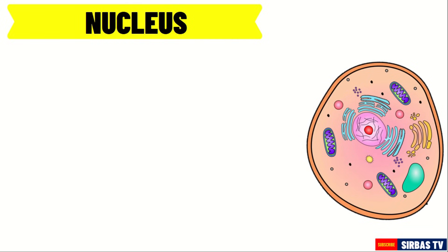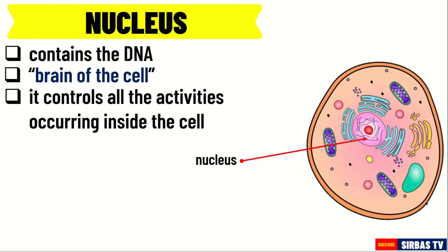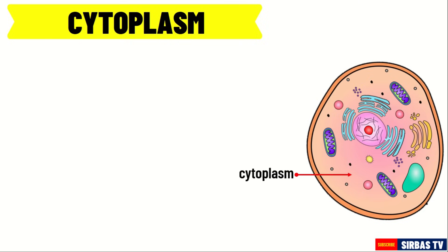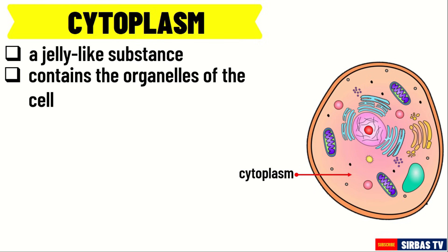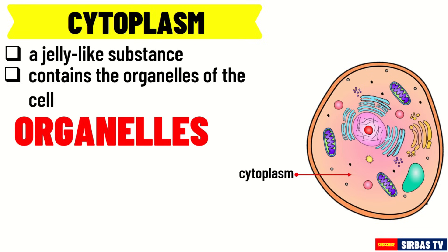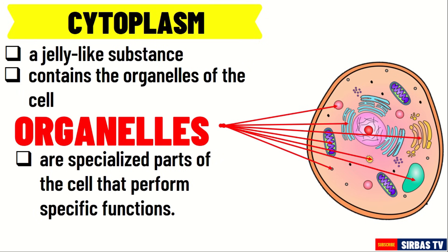The next part is the nucleus. The nucleus is the most noticeable part of the cell. It appears circular or oval in shape. It contains the deoxyribonucleic acid or DNA, which is the hereditary material that carries genetic information in all living things. It is called the brain of the cell because it controls all the activities occurring inside the cell. The cytoplasm is the jelly-like substance that can be found inside the cell. It contains the organelles of the cell that are outside of the nucleus. Organelles are specialized parts of the cell — they are like little organs. Each organelle carries out a specific function inside the cell.